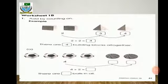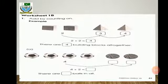Turn to the next page — add by counting on. The first question is already done, but I will explain. There are 2 building blocks. Count on after 2: write 3 and then 4. 2 plus 2 equals 4. There are 4 building blocks all together. Likewise, count the balls and write the numbers using counting on. Be careful.